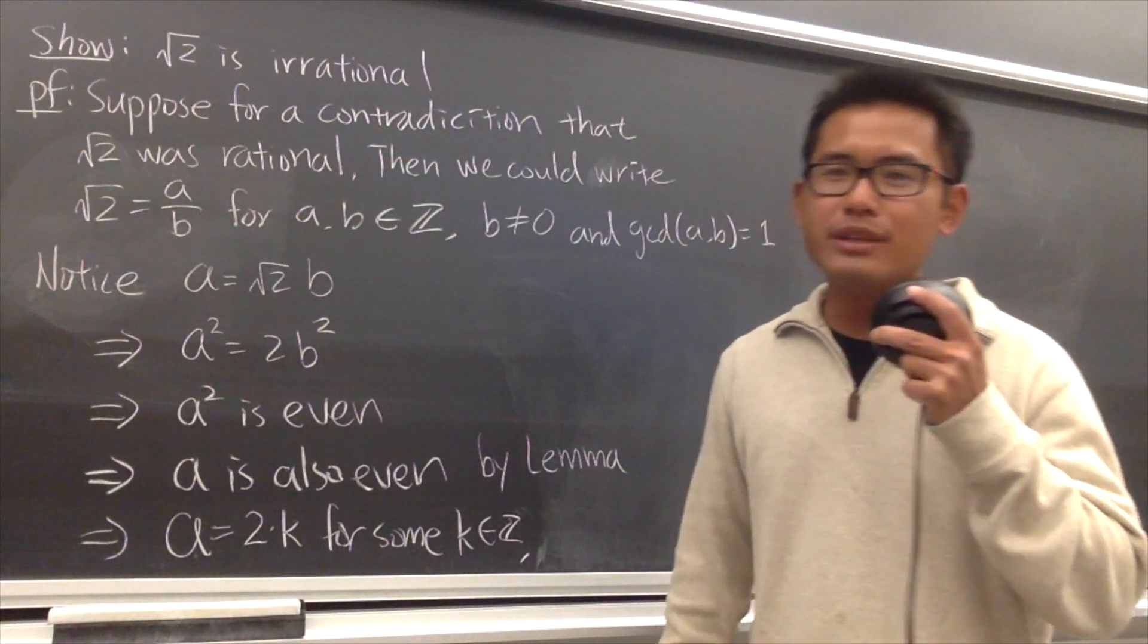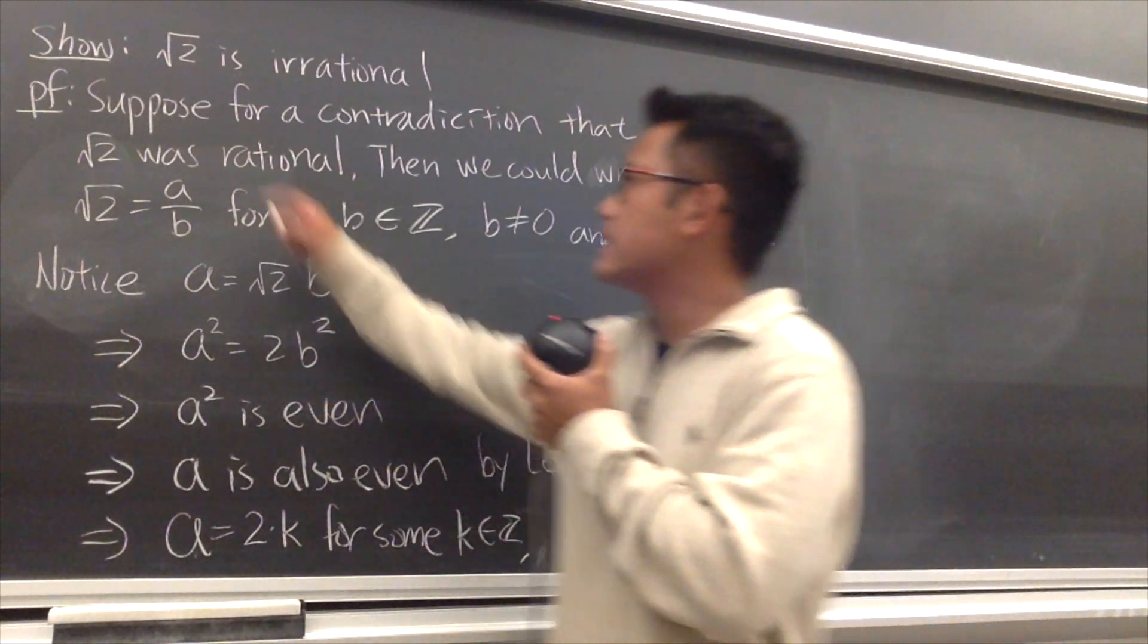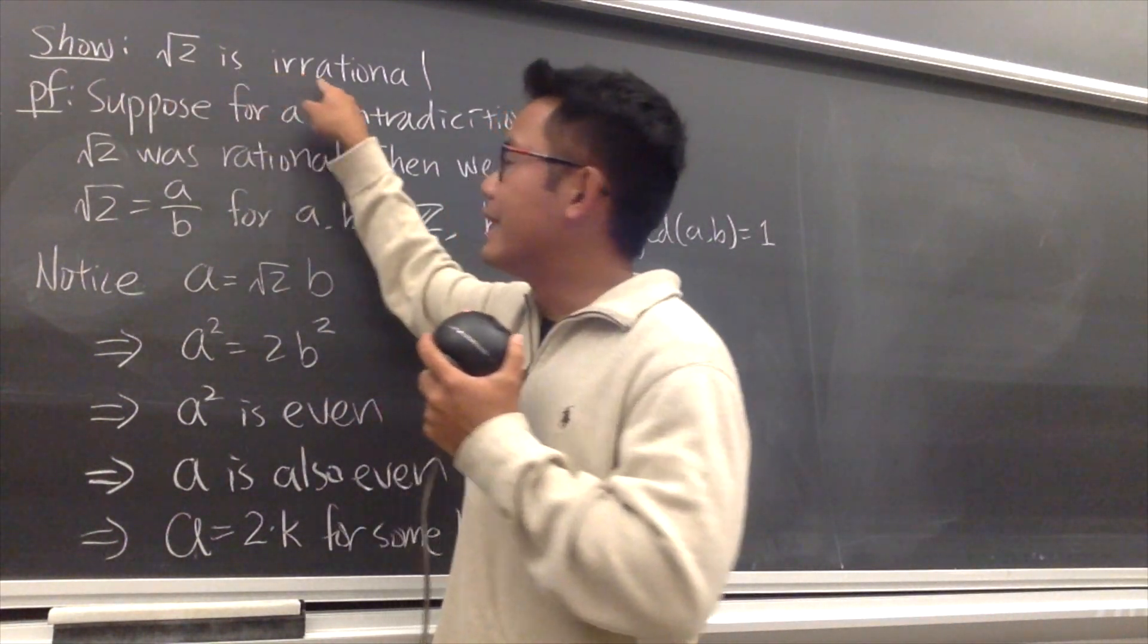Let's do some classic proof for fun. I'll show you guys how to prove a statement by using contradiction, and how to prove that square root of 2 is irrational.